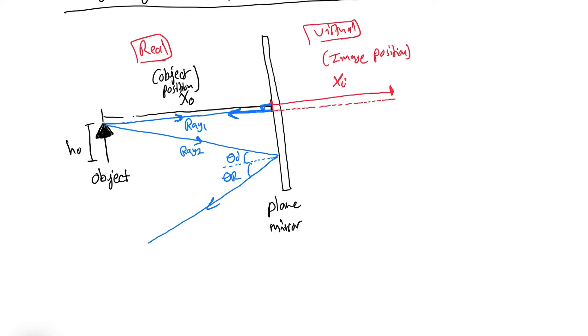Let me extend the other ray, ray number two, and let them intersect at this specific point. Let's have some minor adjustments here. You will notice that once they meet at this point, this is the point where I'm going to be having my image, and my image will be exactly the same size as my object, the same dimensions, exactly the same height, and we'll give it the letter xi.